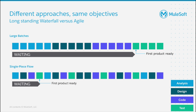In the second case you can see a single piece flow. Here you do smaller iterations where you do analysis, design, code, and test, so that you are adapting to the market, to the customer needs, to the priorities, to the business changes, to the requirement changes. This comes back to the conversation between agile and waterfall.